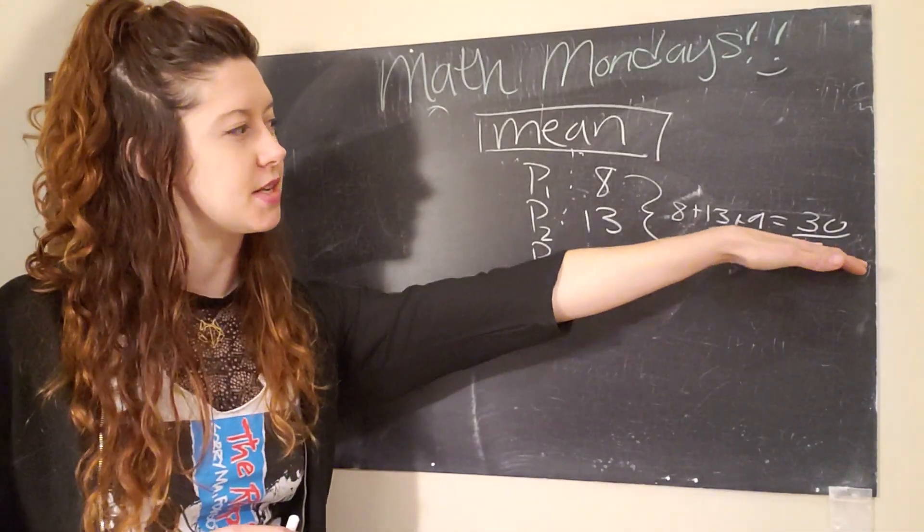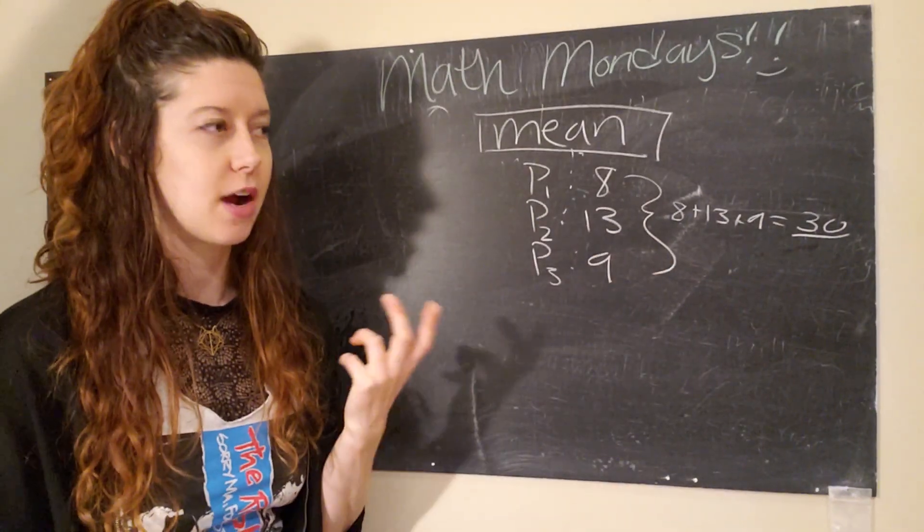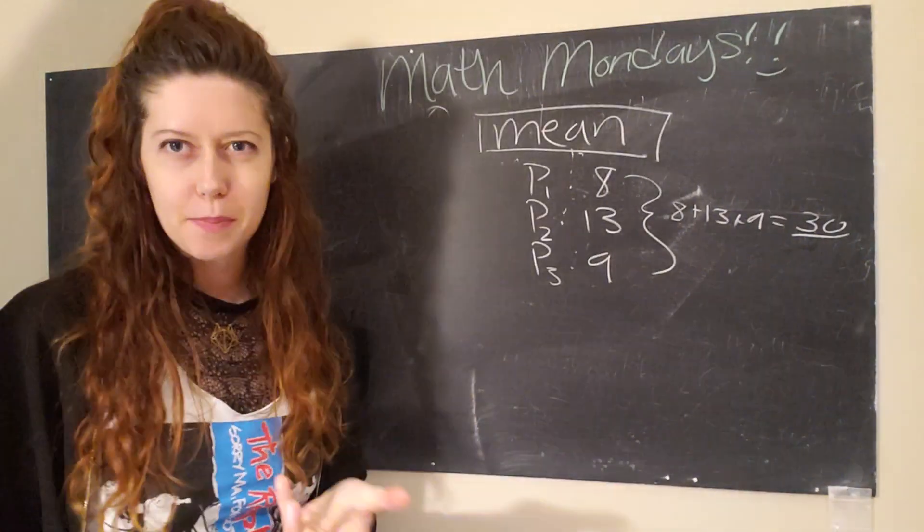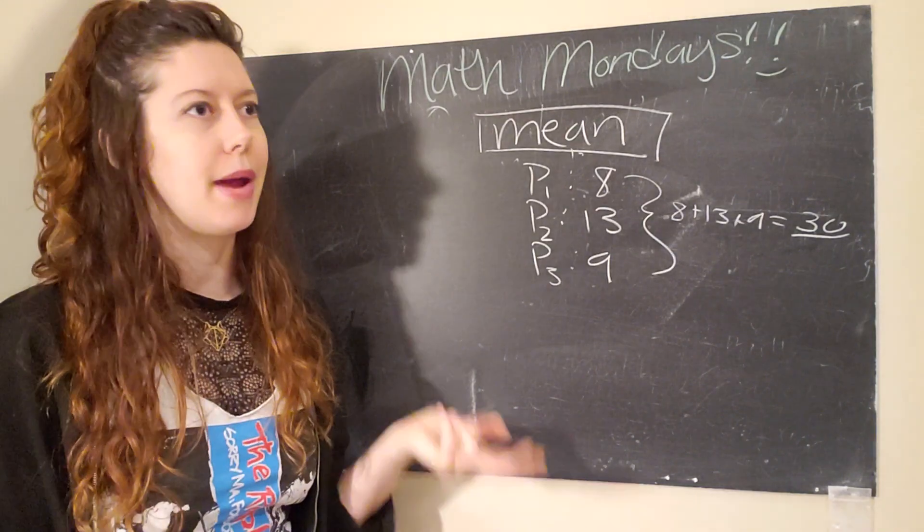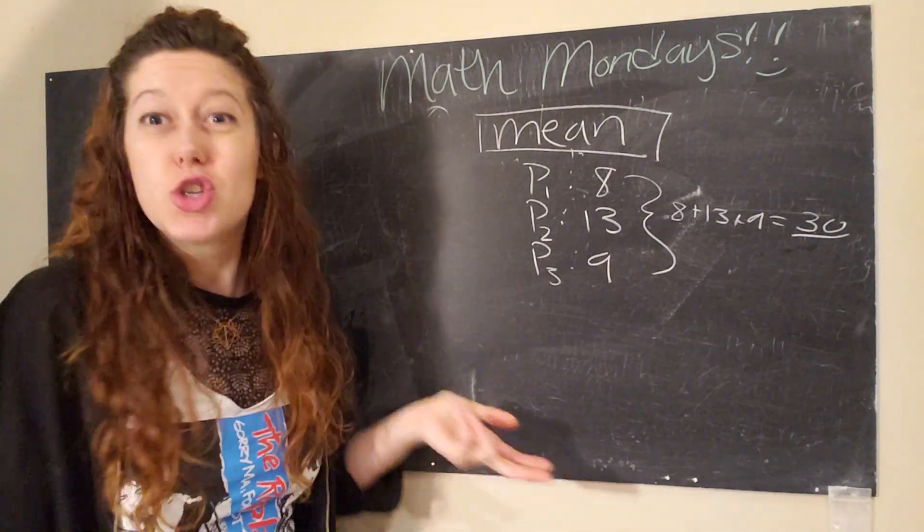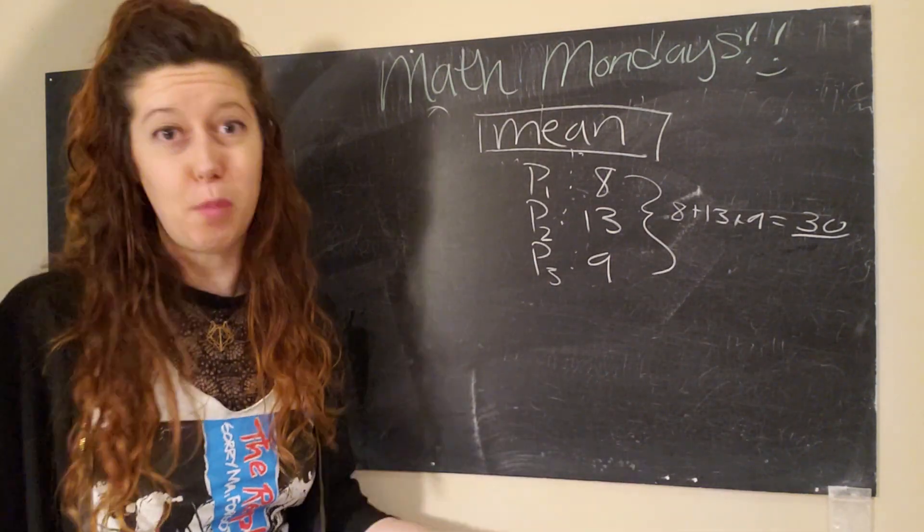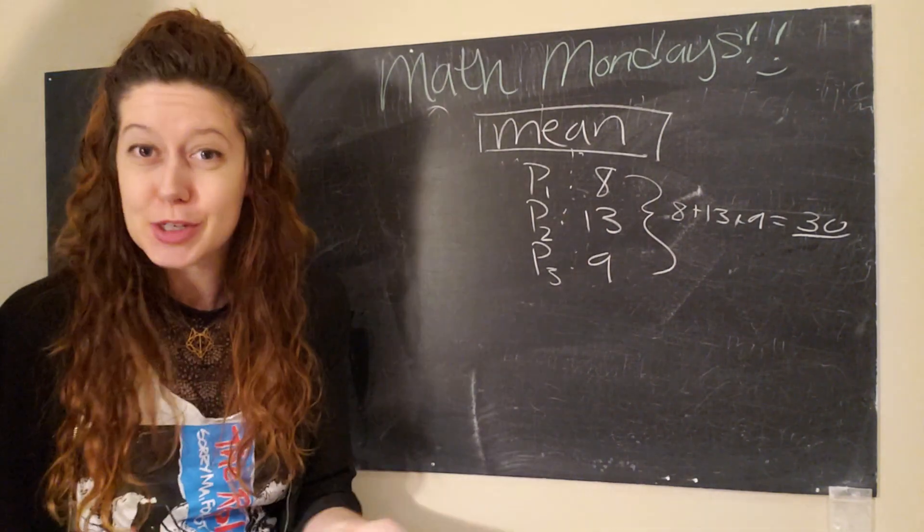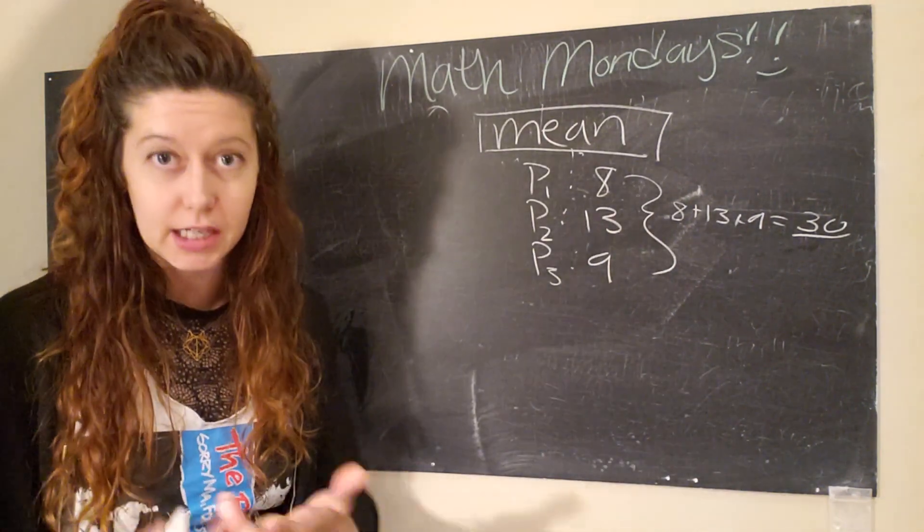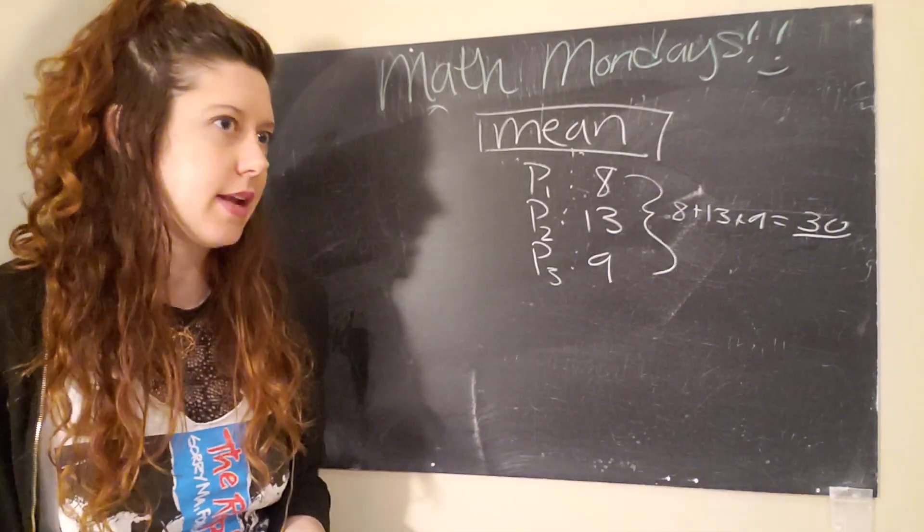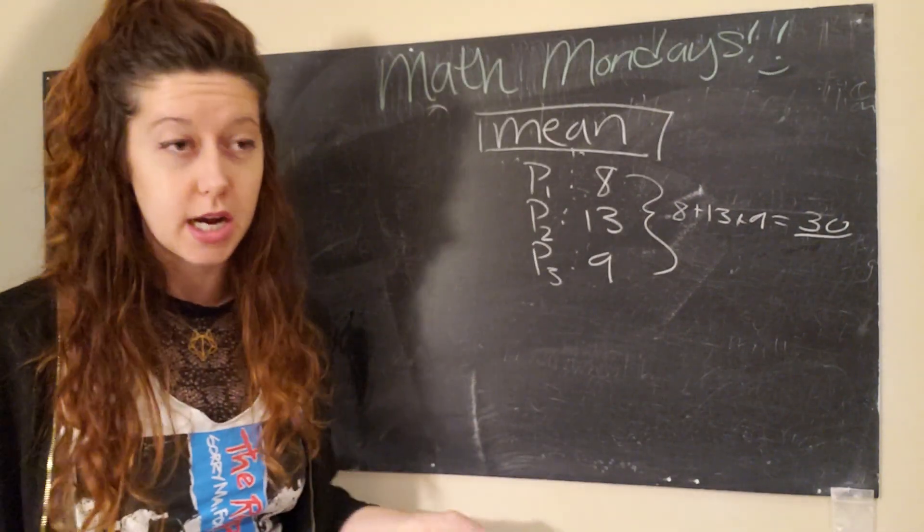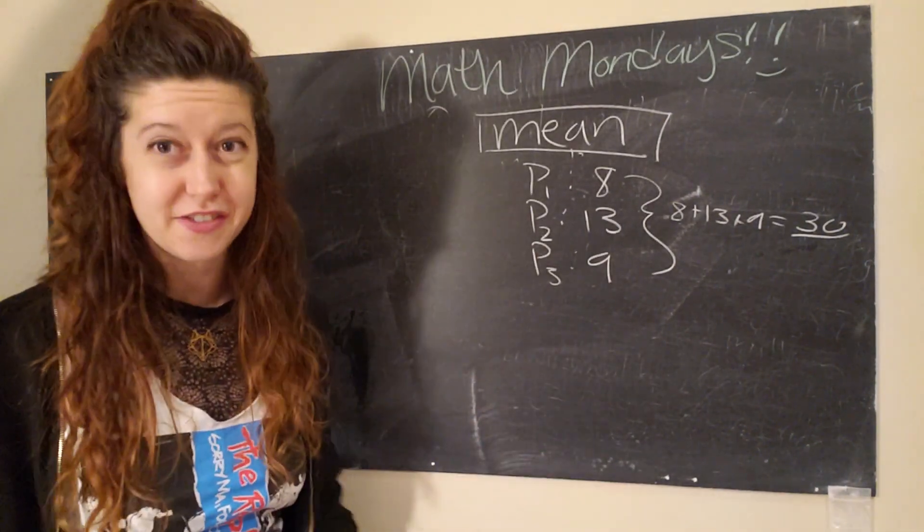So, the first thing we need to do to figure out how many each of us gets, now that we're sharing equally, is to figure out how many total we picked. So, to do that, we add eight plus 13 plus nine. Eight and nine is 17. 17 and 13 is going to give me 30. So, the three of us together picked 30 blackberries. And for the sake of this story, we'll just say that they're giant blackberries. And so, one blackberry is very filling. Okay. So, three of us have 30 blackberries.